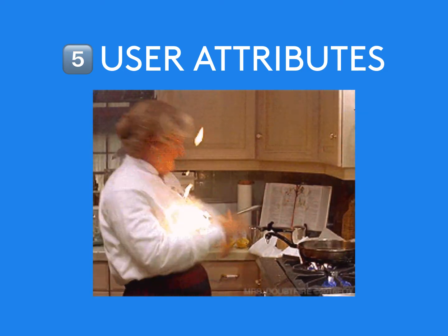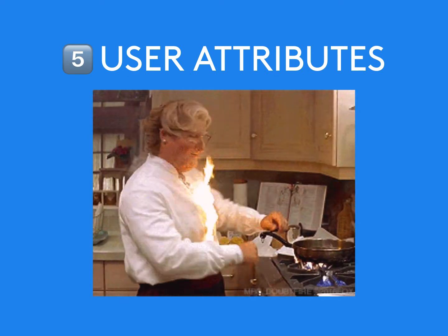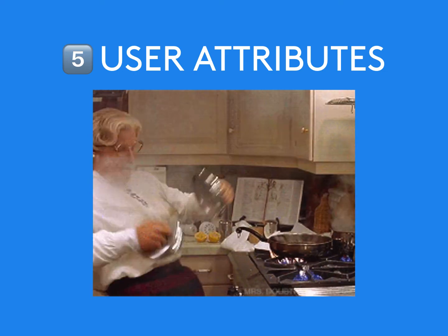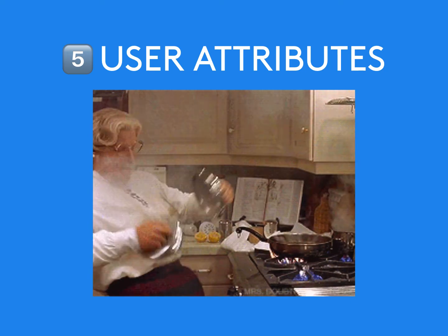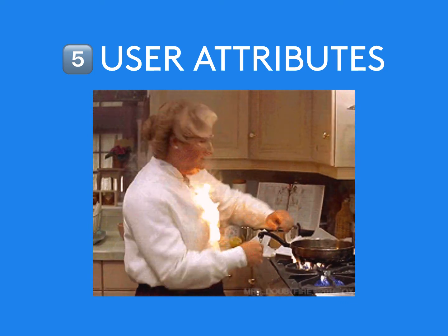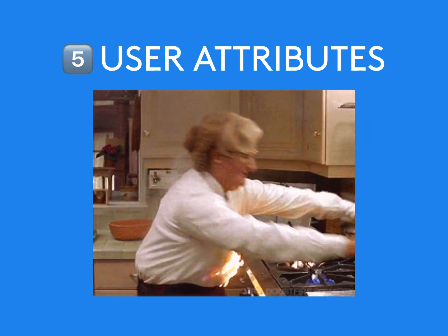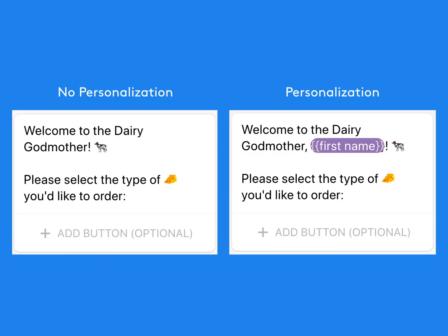Finally, number five, we have user attributes, which is synonymous with personalization. An example in Chatfuel would be using the user's first name to greet them throughout the messenger experience. You could have one variation with no personalization and another with personalization — for example, a cheese shop called the Dairy Godmother testing whether people are more likely to order if you use their first name. You can measure the metrics based on how many people are ordering or clicking through to your website.